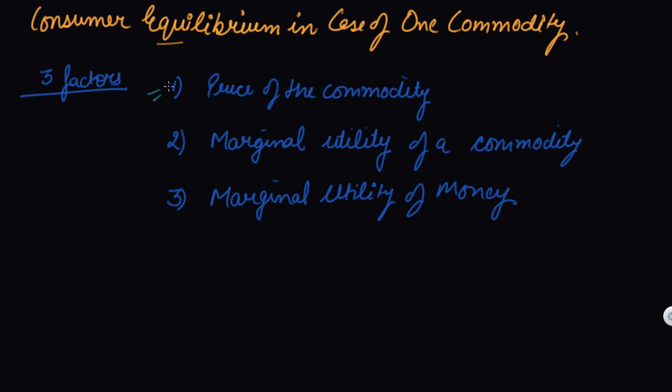The three factors are: number one, the price of a commodity; number two, the marginal utility of a commodity; and number three, the marginal utility of money.